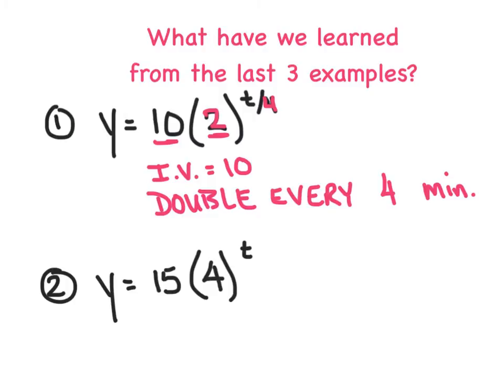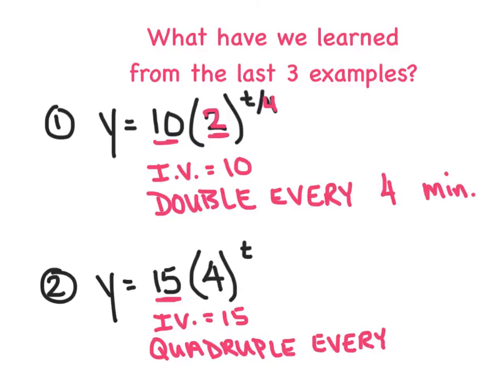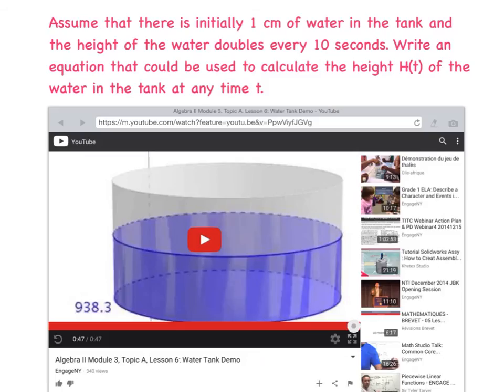On this next example, we'll say 15 represents the initial value. And then in this case, we're going to quadruple. Why do we quadruple? Well, because the base here was a 4, we're going to try to quadruple every how often? Well, what are you dividing the t by, really? Just a 1. So we're going to quadruple every 1 minute.